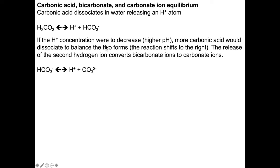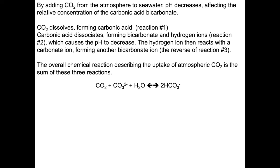When the hydronium ion concentration increases, the pH decreases. When the concentration decreases, the pH increases. Thus more carbonic acid would dissociate to balance the two forms and the reaction is going to shift to the right. The release of the second hydrogen ion converts bicarbonate ions into carbonate ions. Here we have bicarbonate releasing a hydronium ion and a carbonate ion. By adding CO2 from the atmosphere to seawater, the pH is going to go down, affecting the relative concentration of the carbonic acid and bicarbonate.